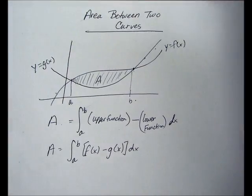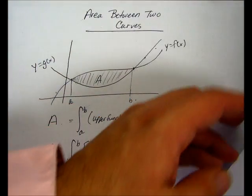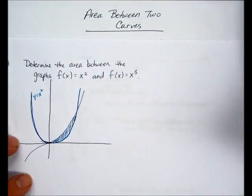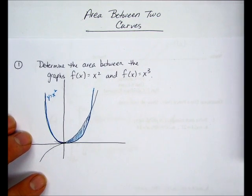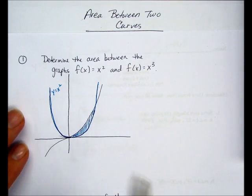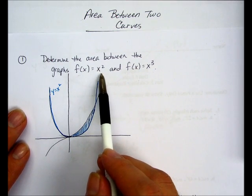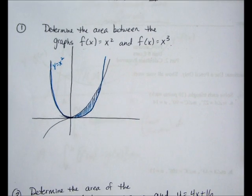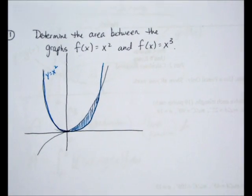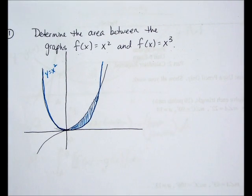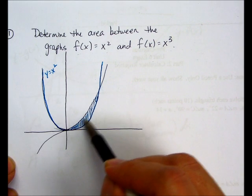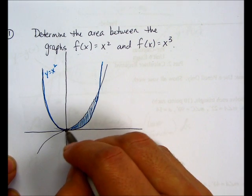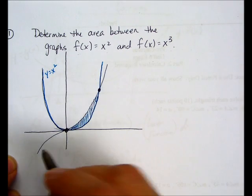So the first example that I'd like to show you is determine the area between the graphs of f of x equals x squared and f of x equals x cubed. So what we're going to do here is we're looking for this area here. So we need to find where these two graphs intersect.